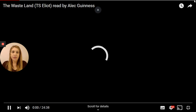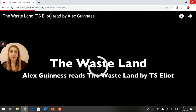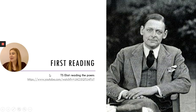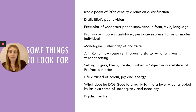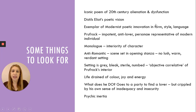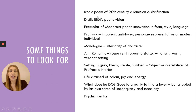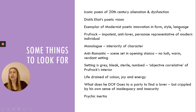Okay, so that first reading was actually really well read and reminded me of some things — it's just easier when you hear someone reading it really well, kind of like Shakespeare. So some things to look for: this is an iconic poem of the 20th century about alienation and dysfunction. It distils Eliot's poetic vision — it's an exemplar of modernist poetic innovation in form, style, and language, using enjambment, rhetorical devices, listing, repetition, symbolism, and allusion.